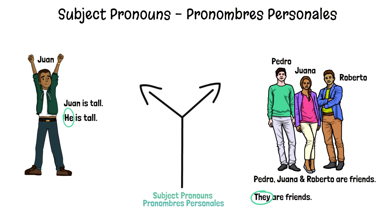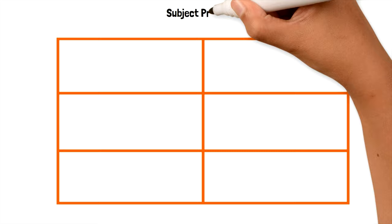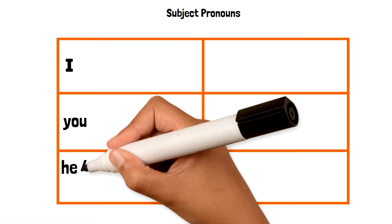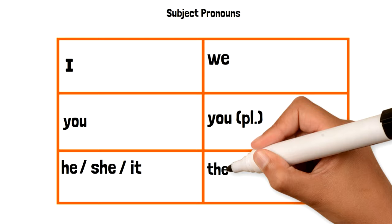Let's look at the subject pronouns in English, and then we can go over them in Spanish. I, you, he, she, it, we, you — which is plural — and they. Those are the subject pronouns in English.